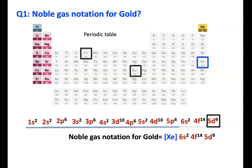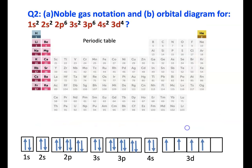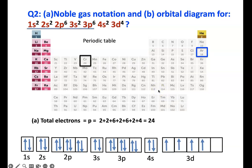If we want to look at another example, look at chromium. This one has 24 electrons. The noble gas that comes before it is argon. You are going to write the noble gas notation as argon followed by 4s2 3d4.